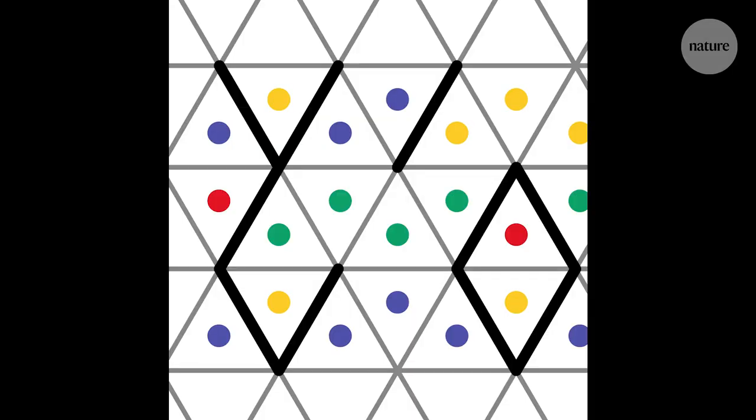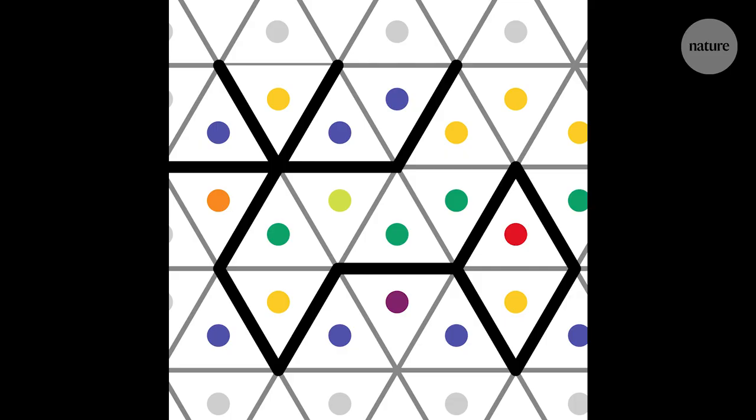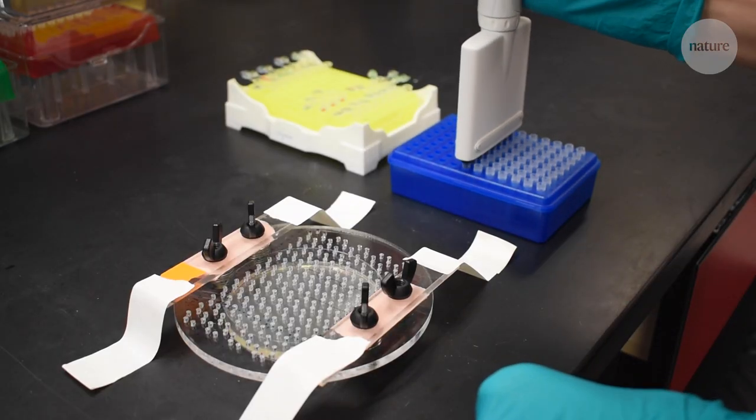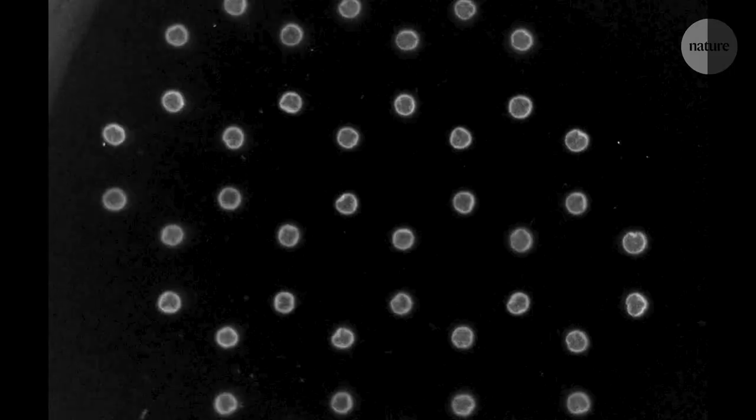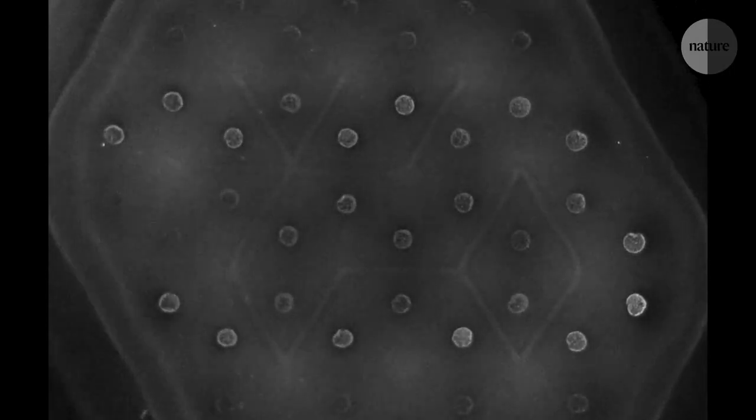Using mathematical principles, the scientists could model where to pipette bacteria with different kinds of adhesins onto a grid matrix. This allows them to create a range of complex patterns.